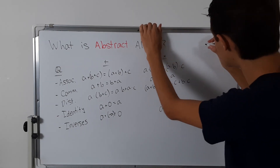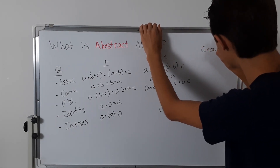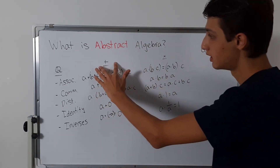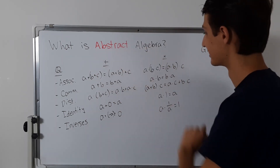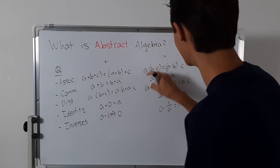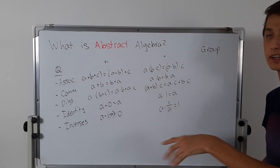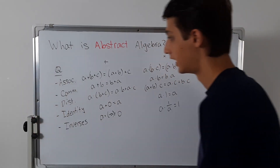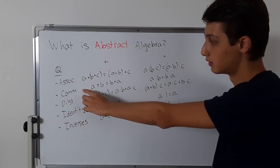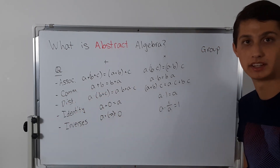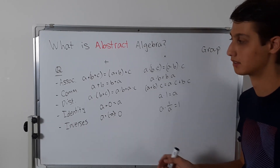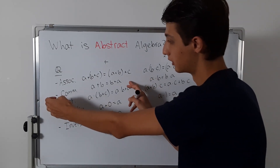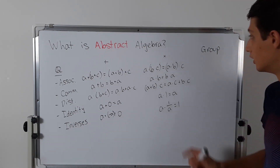A group is a set with one operation that has associativity, identity, and inverses. It could also have commutativity, but that's a special kind of group called an abelian group — named after Abel, who was very influential in group theory. If a group does have commutativity, it's called an abelian group.